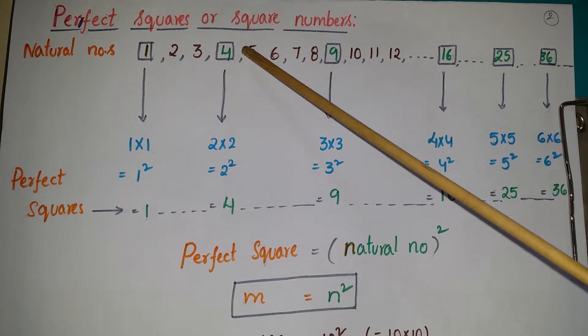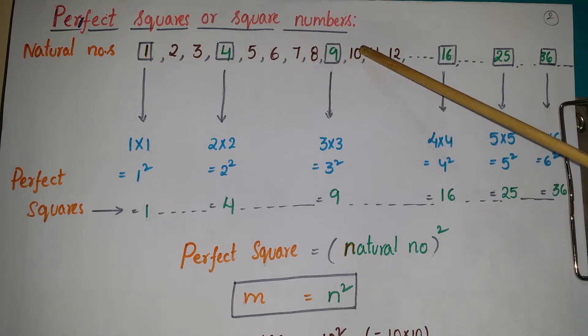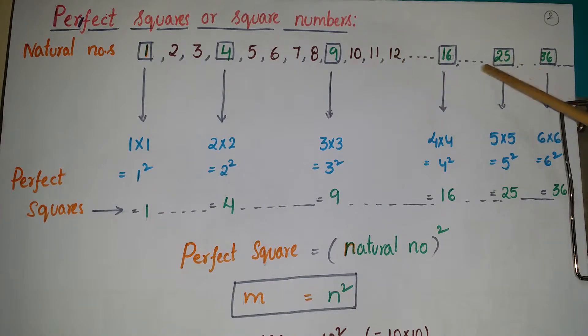See the natural numbers 1, 2, 3, 4, 5, 6, 7, 8, 9, 10, 11, 12, etc., 16, etc., 25, etc., 36, etc.